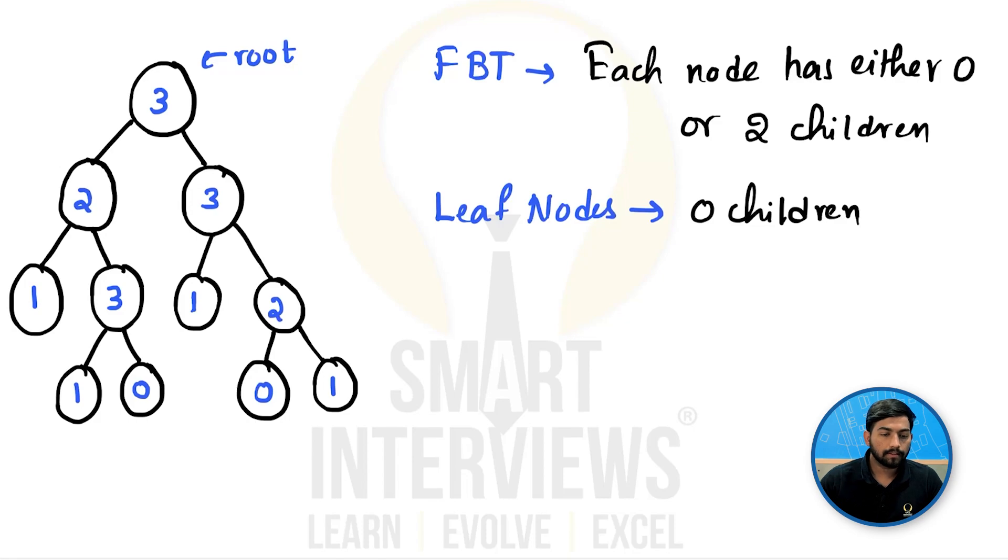And the nodes with 0 children are called as leaf nodes. Also, the nodes in the tree have only values 0, 1, 2 and 3.